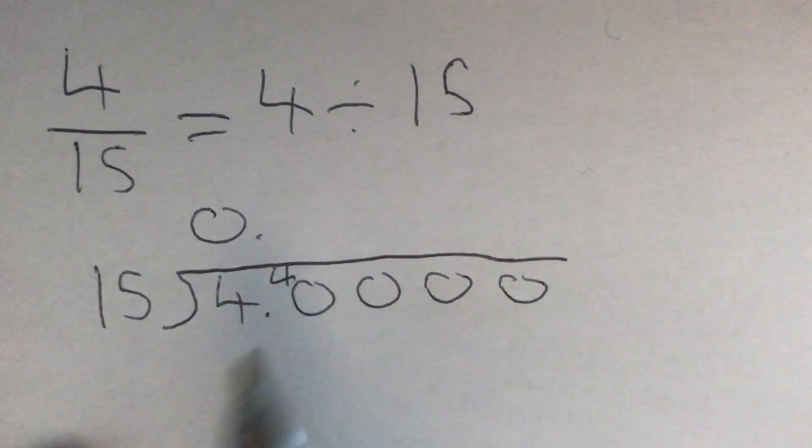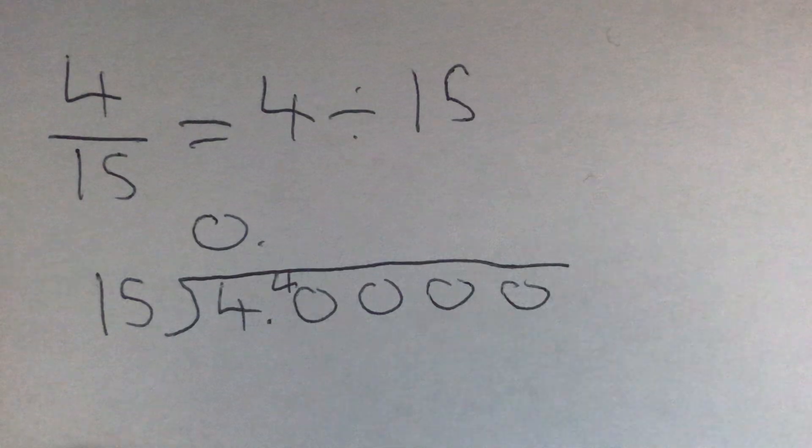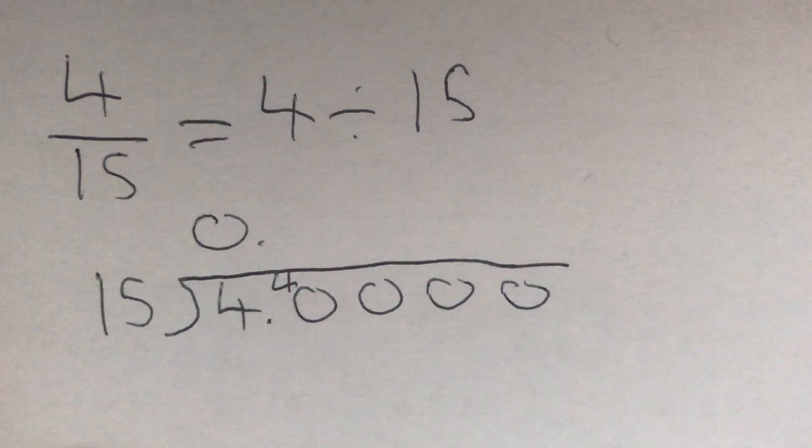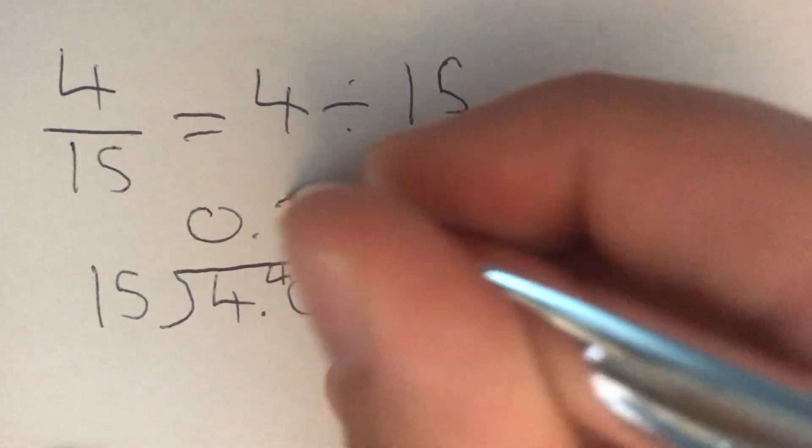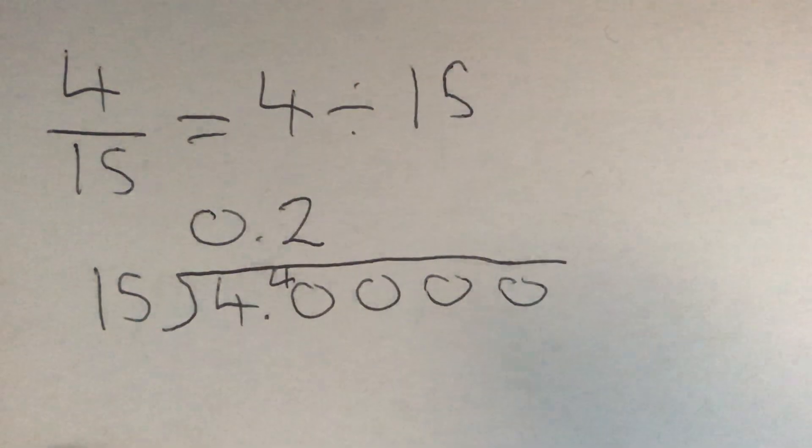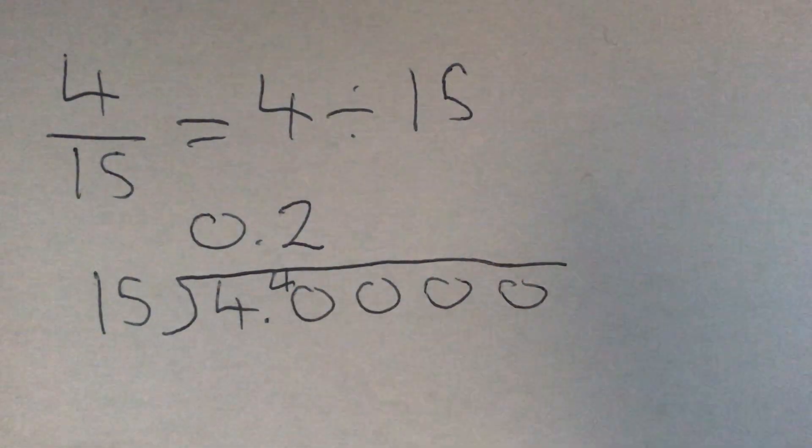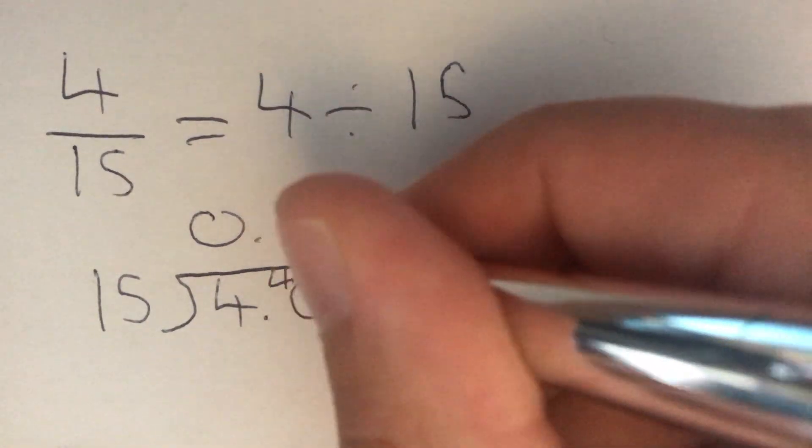Now we're thinking how many 15s go into 40. Well, let's think: 15, 30, 45, we've gone over. So only 2 of our 15s fit into that 40. And because 2 times 15 gives us 30, we've got 10 left over at that 40. So we carry across a 10.